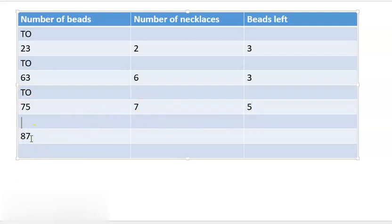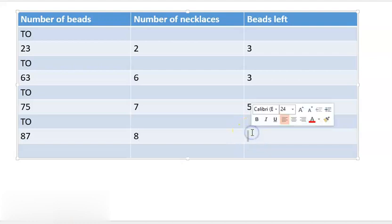Now the next number is 87 — she is having 87 beads. From 87 beads, how many necklaces can she make? We write 10s and 1s, meaning T and O. On the place of 10s we have 8 — 8 means the number of necklaces she can make, so she will make 8 necklaces. And the number of beads left is 7.